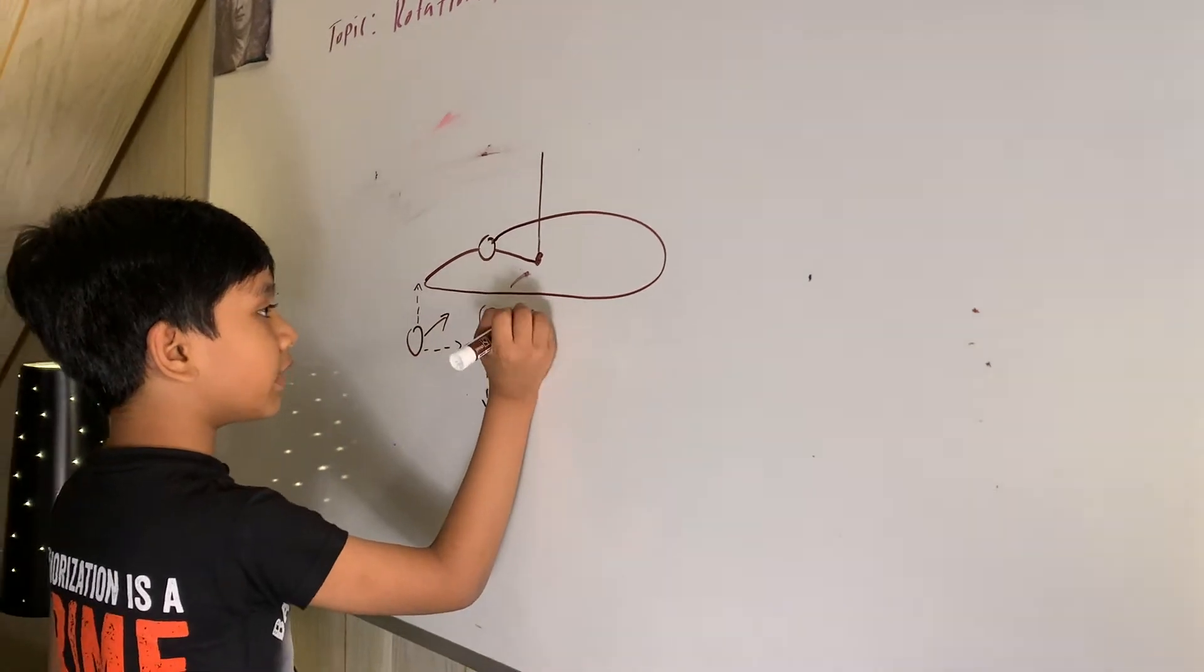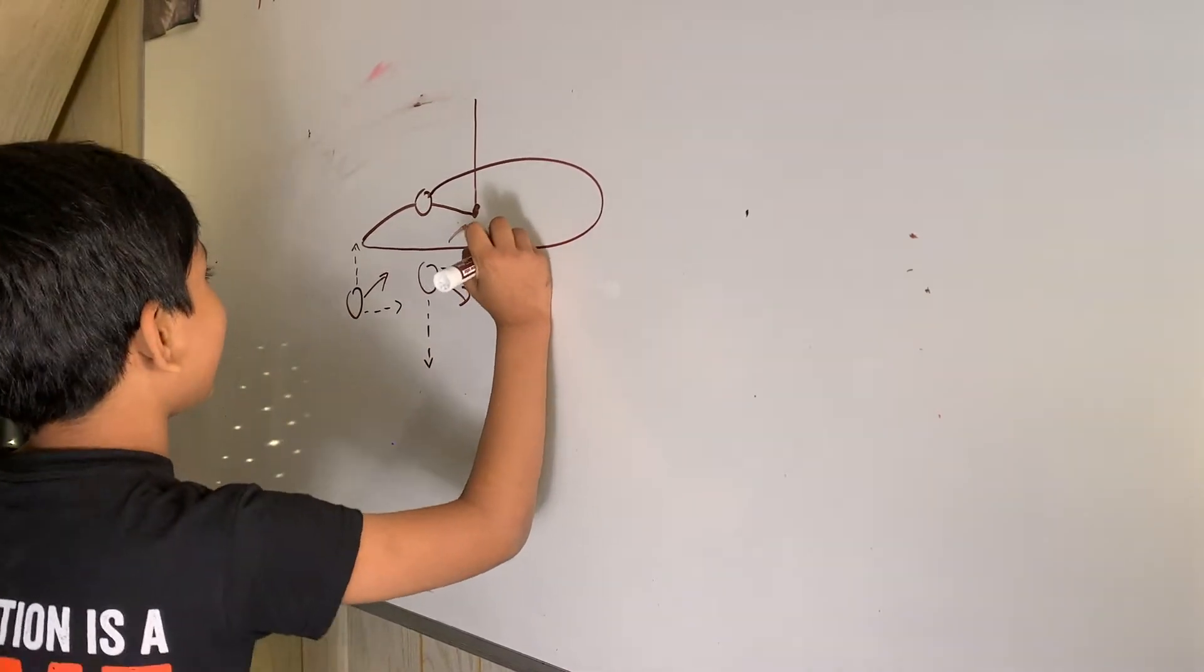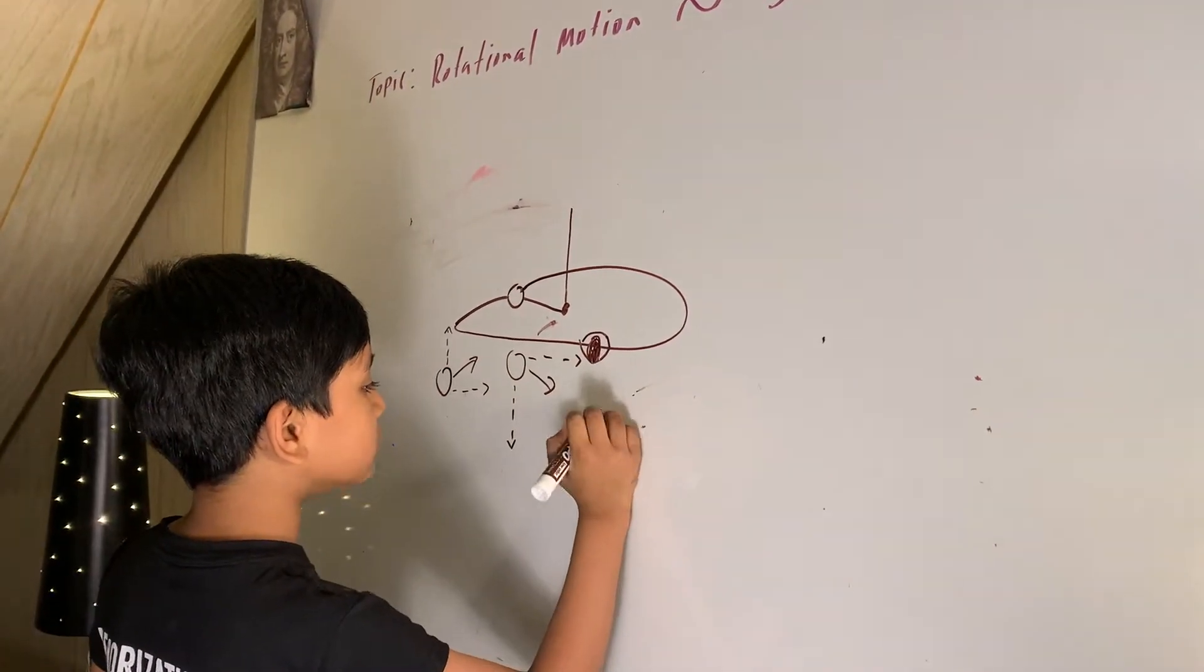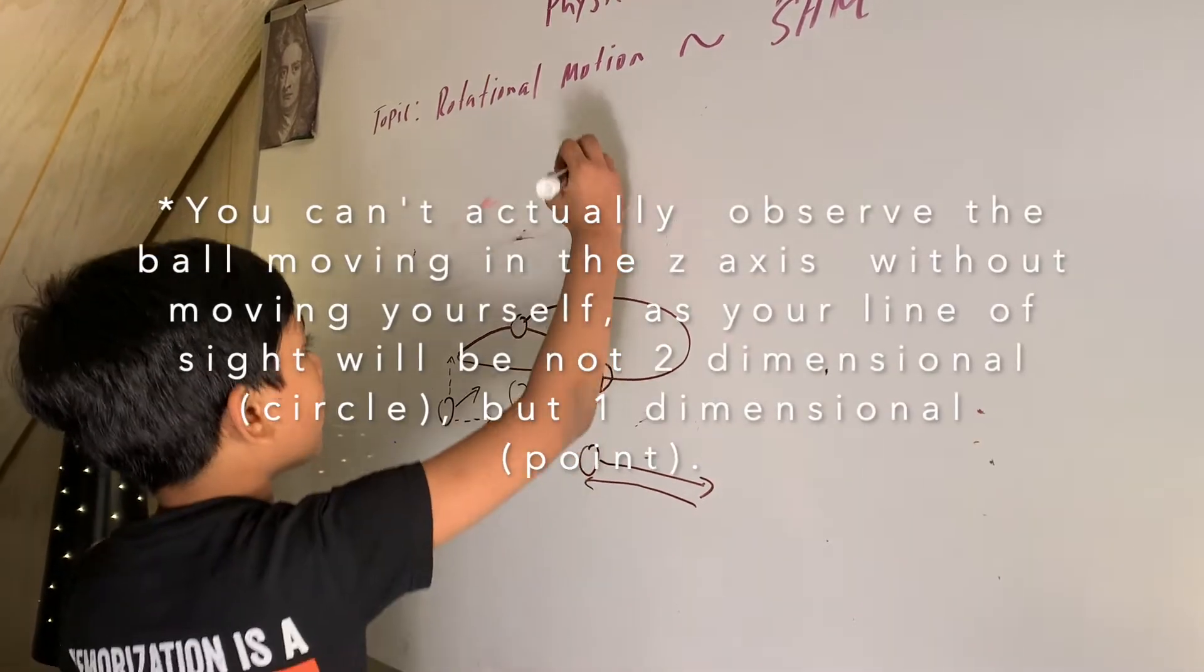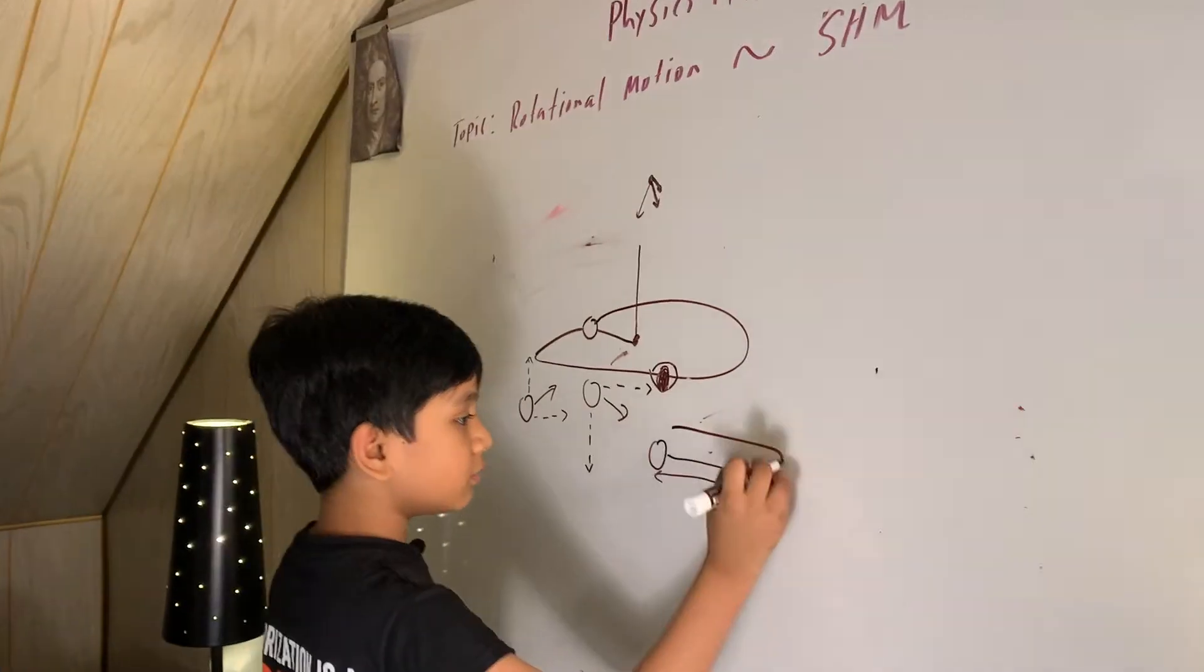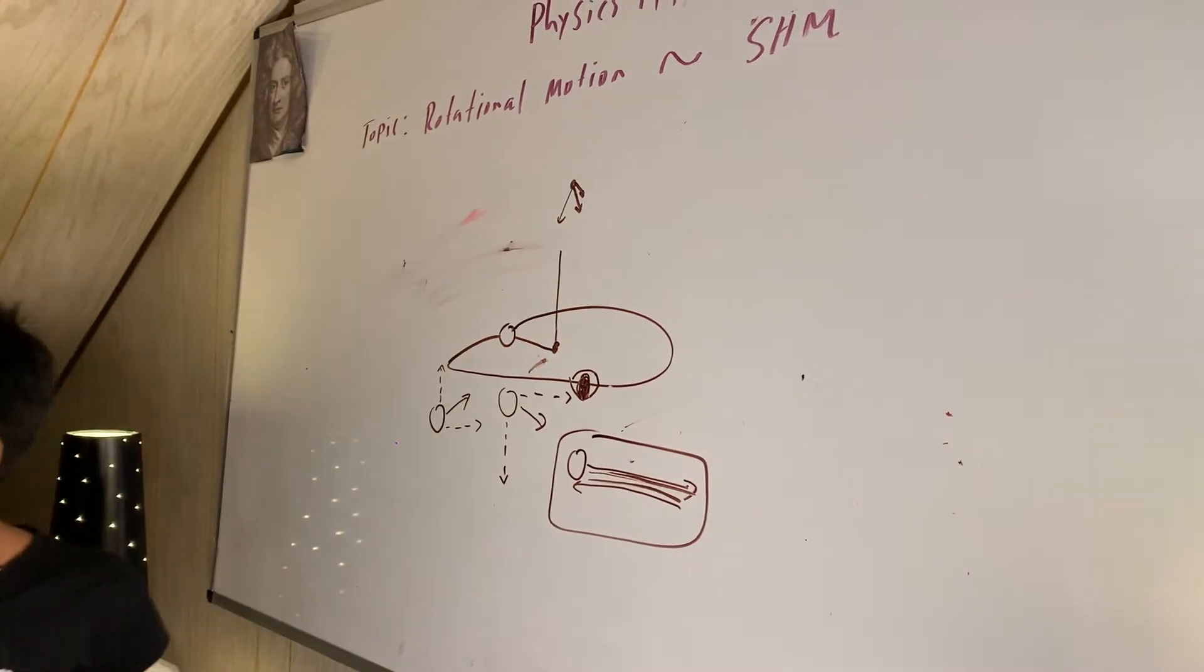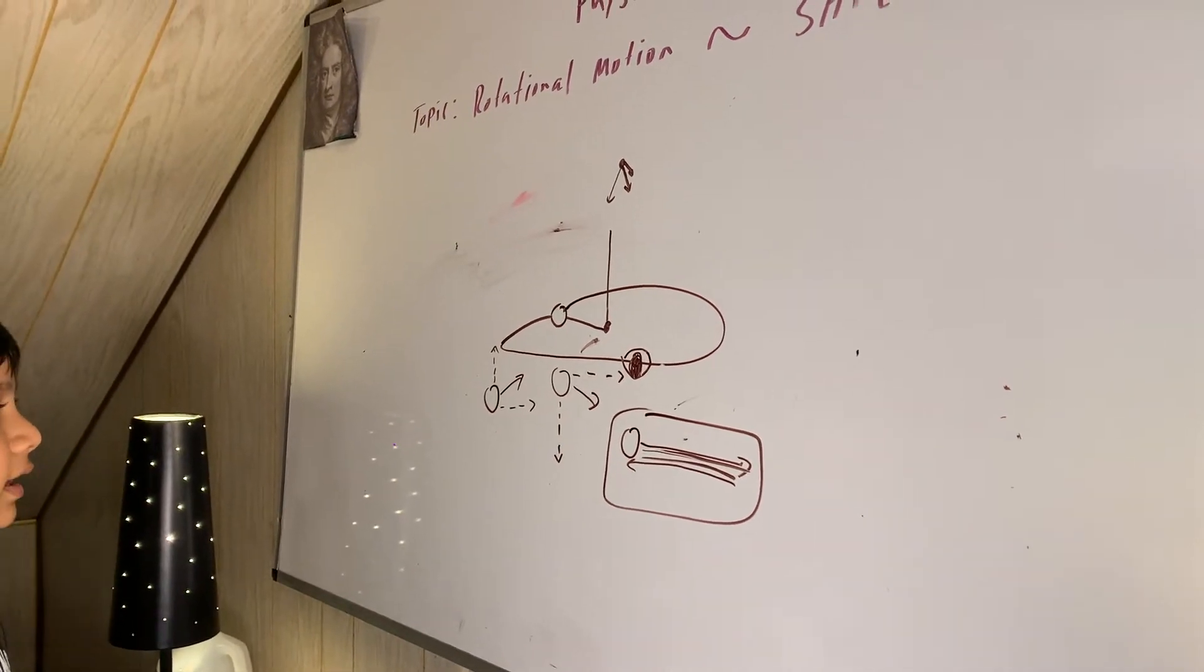However, when you look at it from a perspective where you're at the edge of the table, everything is just cut off because all the motion you see is cut down to single-dimensional movement. You can only see it going in simple harmonic motion, moving this way and that way. So, that's a very nice way of analyzing rotational simple harmonic motion.